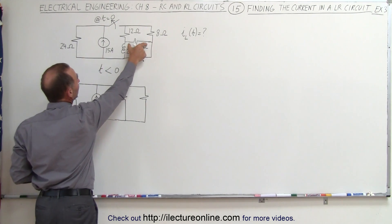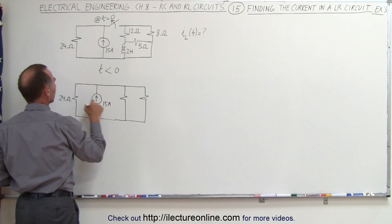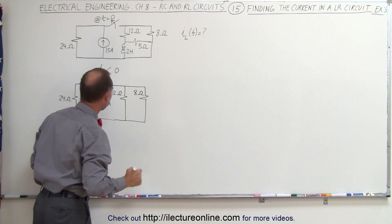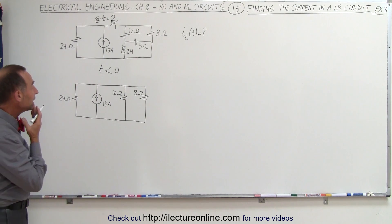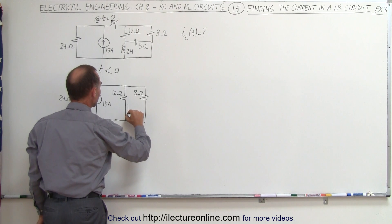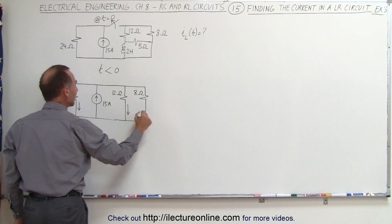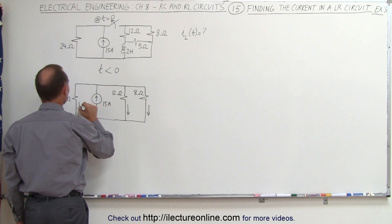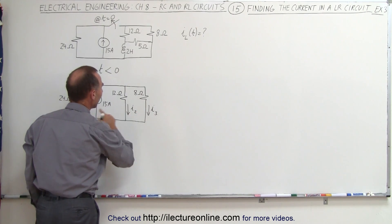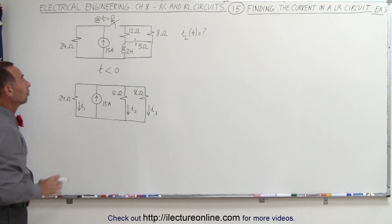So the inductor acts like an open and the wire acts like a short. We have a 24-ohm resistor, a 12-ohm resistor, and an 8-ohm resistor. Now we need to find the initial current through the inductor, which means we need to find this current. In order to do that, let's find the current through each of the three branches. We'll call them I sub 1, I sub 2, and I sub 3 — the current through each of those three branches before the switch is opened.